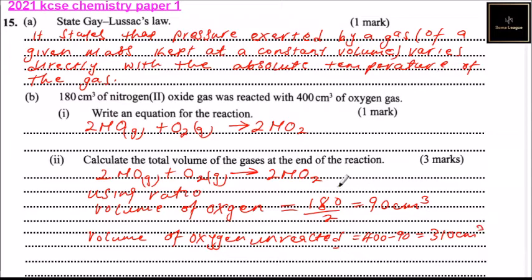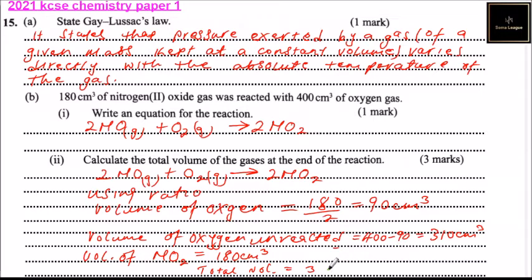The volume of nitrogen dioxide produced equals 180 cm³. So the total volume equals 310 cm³ (unreacted oxygen) plus 180 cm³ (nitrogen dioxide), giving a total of 490 cm³. That is how you work out the volume of gas at the end of the reaction, and you get three marks.